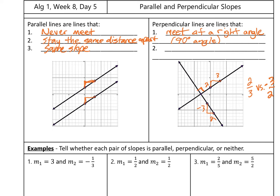These two slopes are opposite signs of each other. One's a positive, one's a negative. And then one of them is the flip of the other. We call that a reciprocal. So 2 thirds and negative 3 halves are opposite reciprocals.